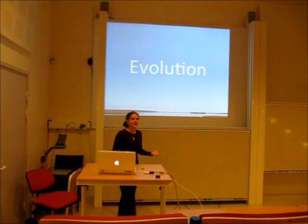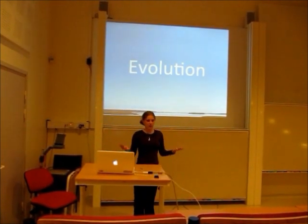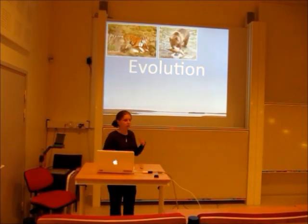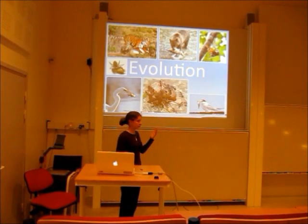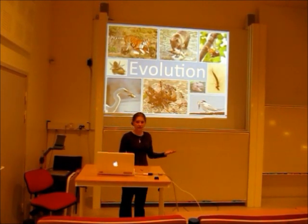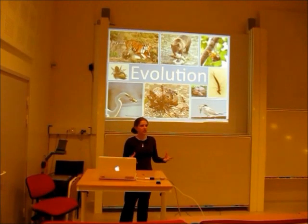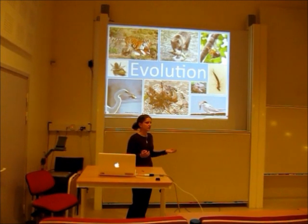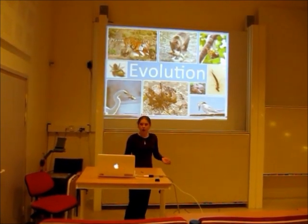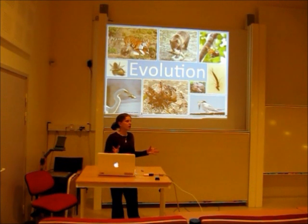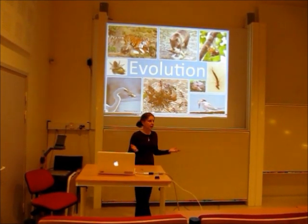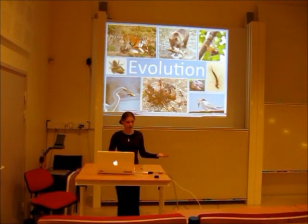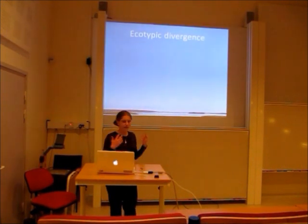Evolution is an ever ongoing process and one of its driving forces is predation. Predators can, by both indirect and direct effects, affect the composition of the prey community as well as the prey size and their behavior. Different predators hunt in different ways and thus affect the prey in different ways. One part of evolution is ecotypic divergence.